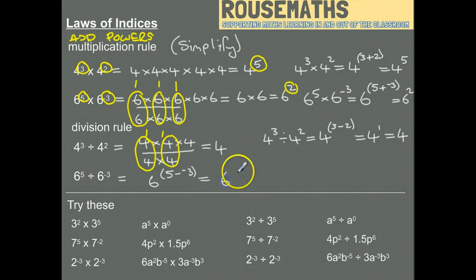That's 6 to the power 5 plus 3, because if you take away a negative it's like adding, so I take away an insult, you feel better. And we get 6 to the power 8 as our final answer.